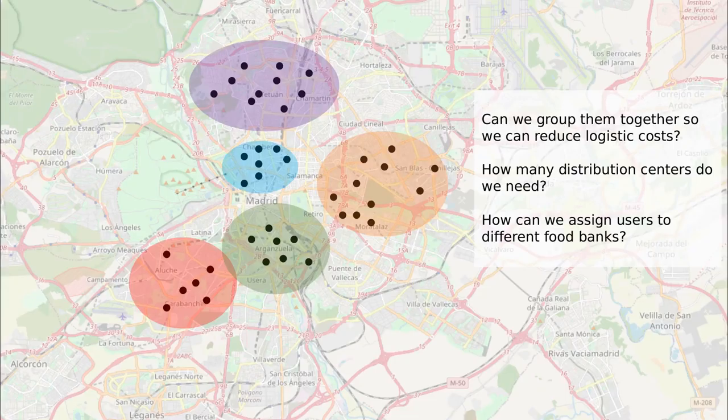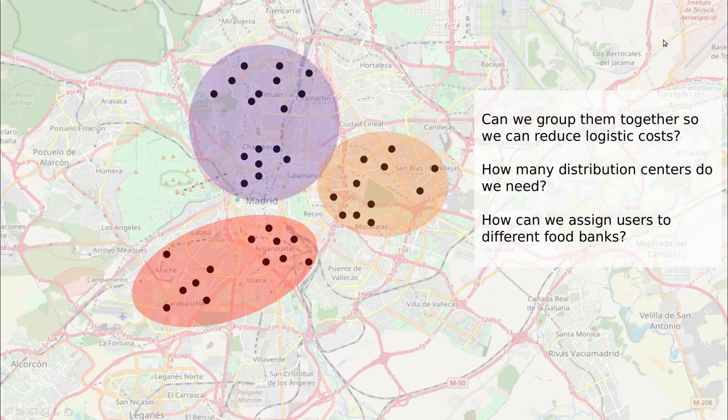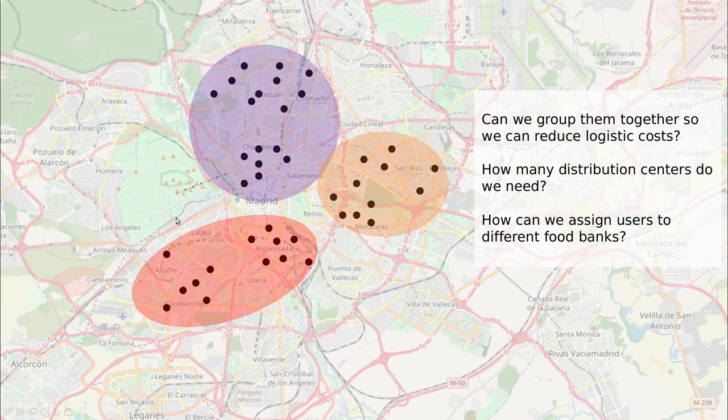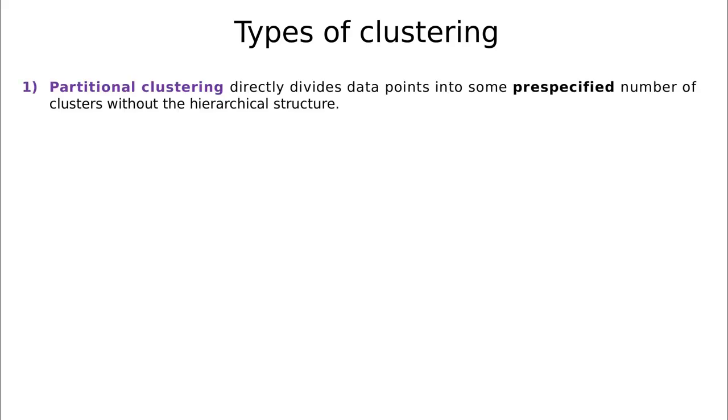The problem is that whenever we define a criterion, we're going to have a different number of groups. Going back to our previous example, we decided that this was a good partition, but what about this one, or even what about this one? Depending on the subjective decision of what is homogeneity or how we define a gap, we're going to reach different conclusions.